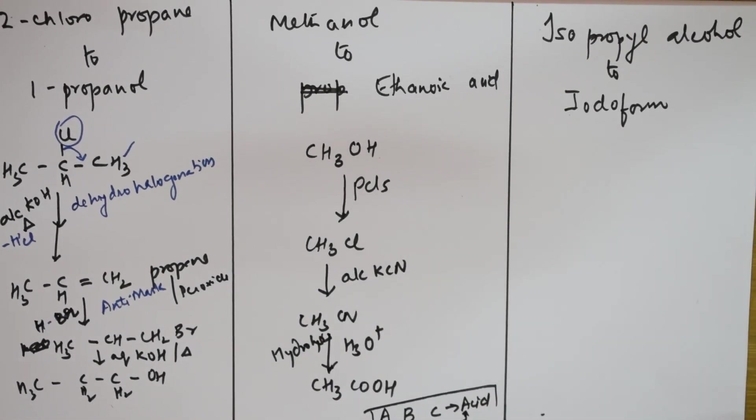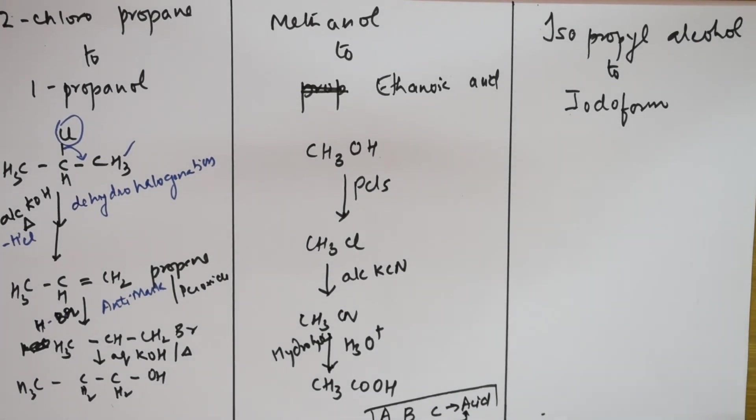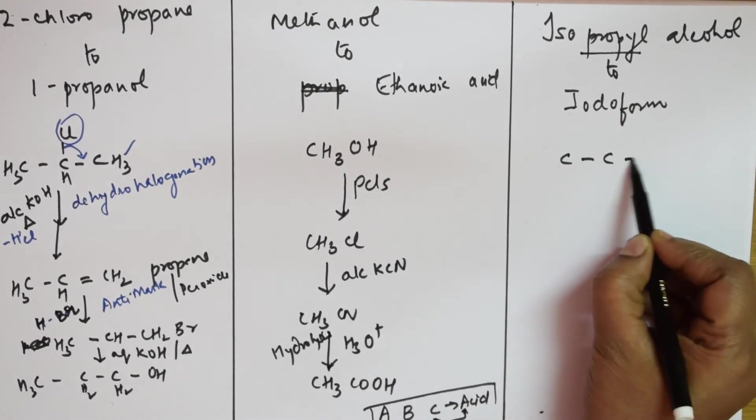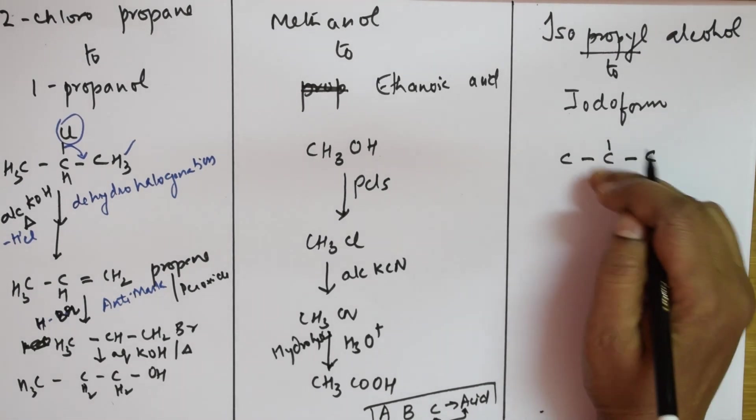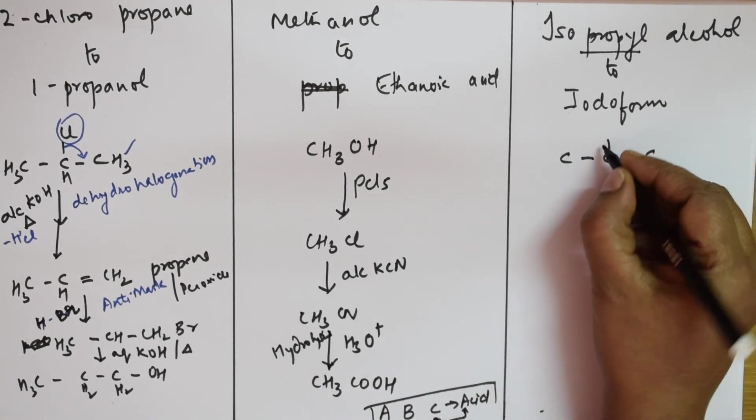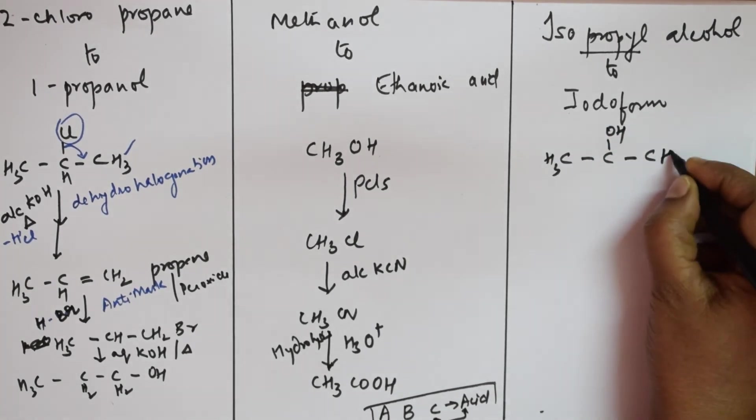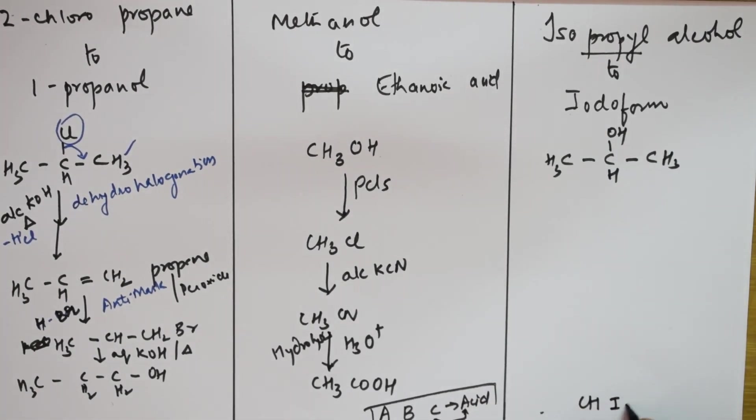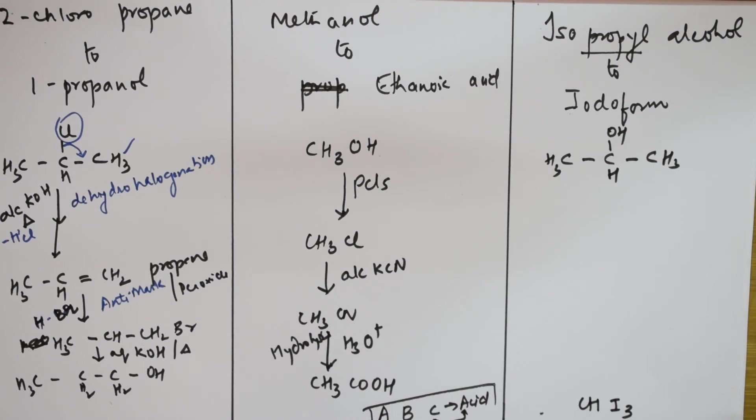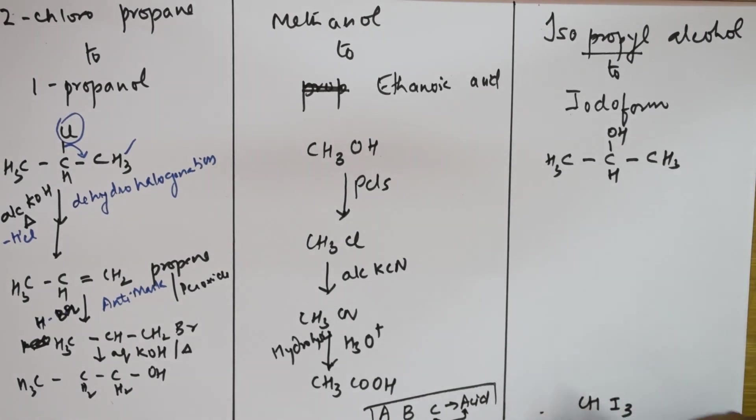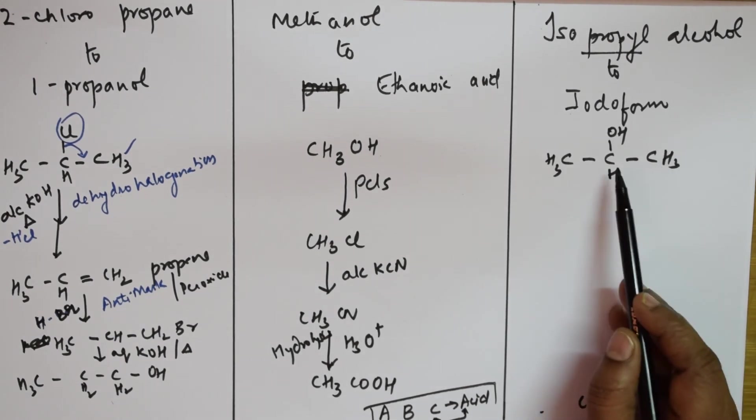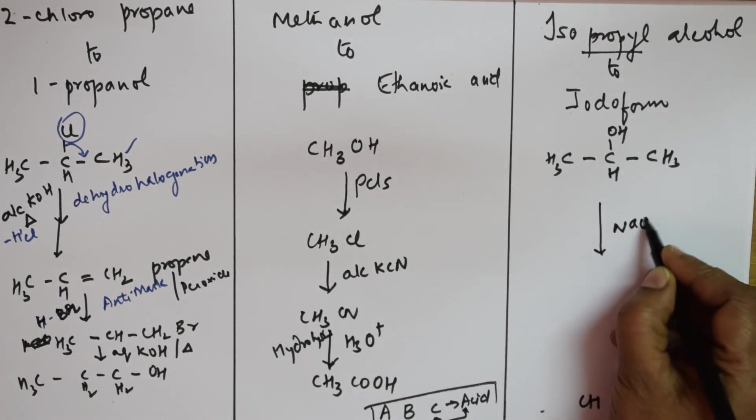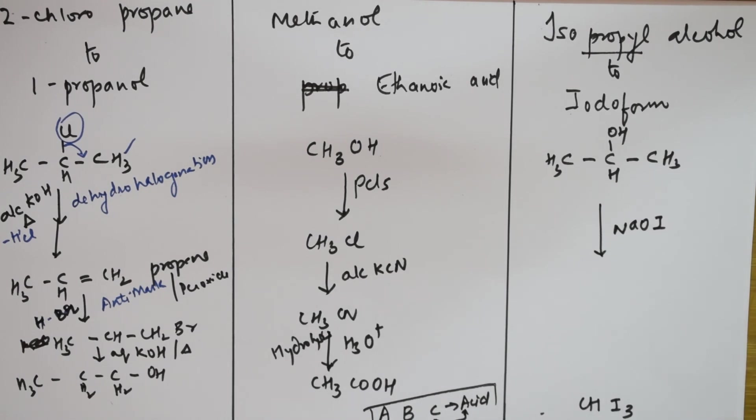Now here they've given me one more: isopropyl alcohol to iodoform. Isopropyl alcohol - what is isopropyl? First of all, let us write propyl one, two, three. Iso means in the center this group - this is your iso group where we have both the methyl groups. Isopropyl alcohol OH, this is CH3-CHOH-CH3. I have to convert into iodoform. What is iodoform formula? CHI3. I can easily get this because you have a methyl group adjacent to this.